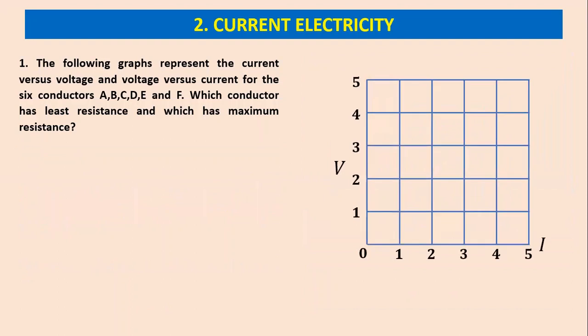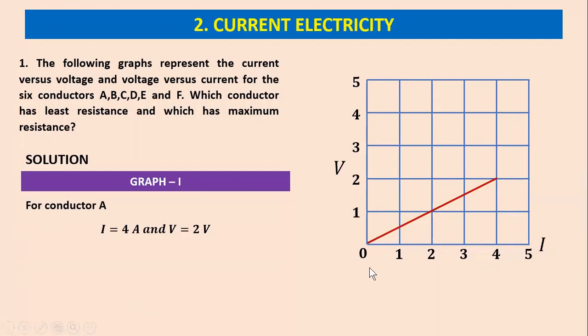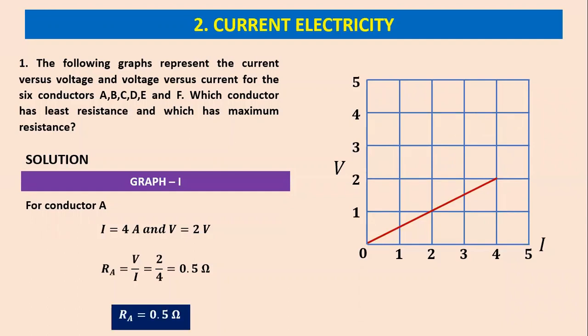Let us find the first graph, voltage versus current. For the first straight line, it meets a point (4, 2) — the current is 4 amperes and the voltage is 2 volts. The slope of this curve gives you the resistance. So for conductor A, R_A equals V divided by I, which is 2 divided by 4, giving 0.5 ohms.